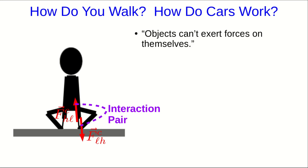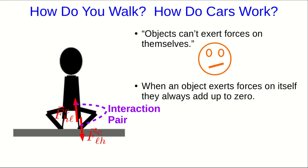I'll often say objects can't exert forces on themselves, although this shows that's not really true. What is really true is that when an object exerts forces on itself, those forces always add up to zero because it'll be a set of interaction pairs. This might make you wonder how anything ever moves.